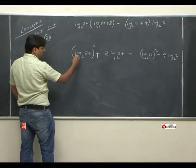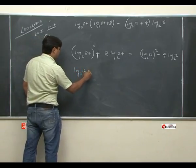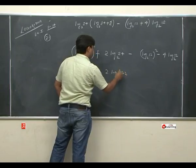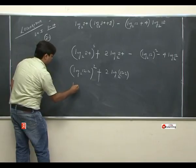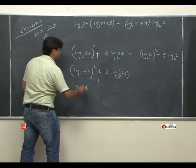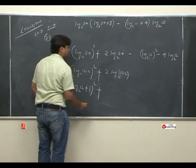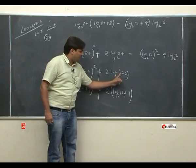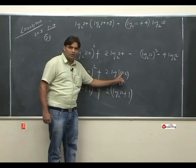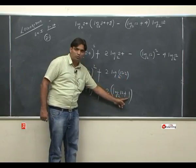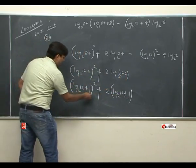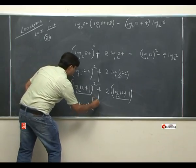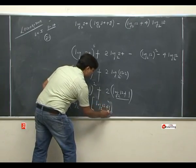तो: (log 12 base 2 + 1)² + 2 into (log 12 base 2 + 1) — minus (log 12 base 2)² — 4 into log 12 base 2. log 24 into log 24 → (log 24 base 2)² = (log 12 base 2 + 1)². अब देखिए — (log 12 base 2 + 1) is common in these terms. Inside bracket: log 12 base 2 + 1 + 2. So: (log 12 base 2 + 1) into (log 12 base 2 + 3).